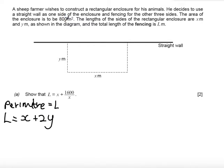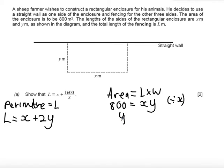So I'm going to use this additional information that the area of the enclosure is 800 metres to link x and y together and replace this y. So what I know is that the area is equal to length times width. The area I'm told is 800 and the length is x and the width is y. So now I can rearrange if I divide both sides by x to get that y equals 800 over x.